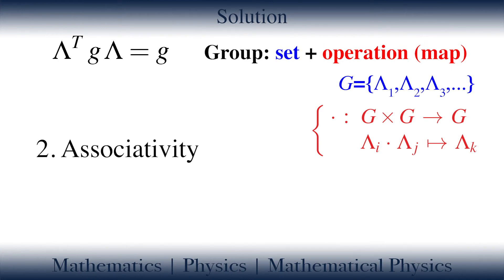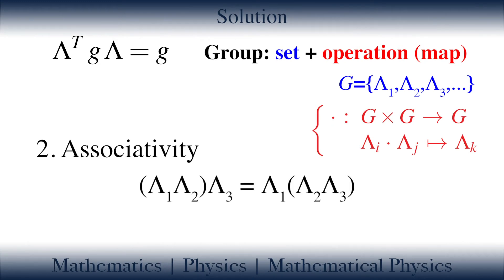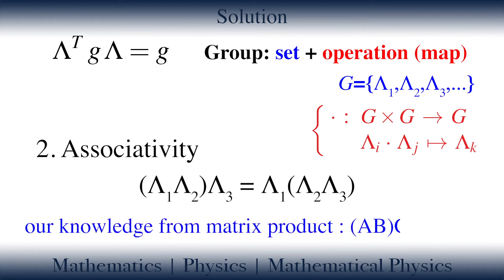The next step is to prove the associativity property of the Lorentz transformations. The associative property states that for the product among more than two group members, the way in which factors are grouped does not change the product. This is also very simple to prove. We just note that the Lorentz transformations are linear transformations acting on a vector space called Minkowski space, so we can represent these linear transformations with four-by-four matrices on the basis of four-vector representations. Each group operation among the Lorentz transformations simply turns into the matrix product, and since matrix product satisfies the associative property, we conclude that Lorentz transformations also obey the associative property.